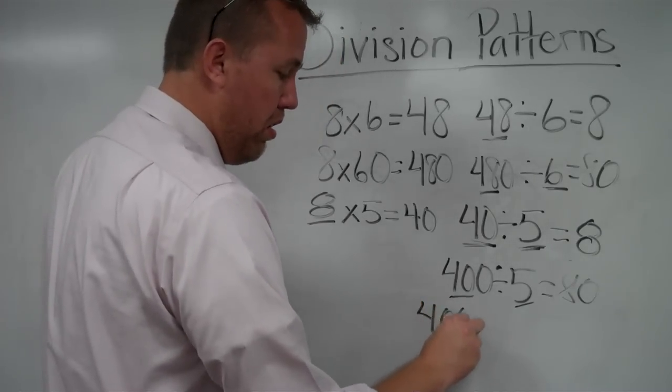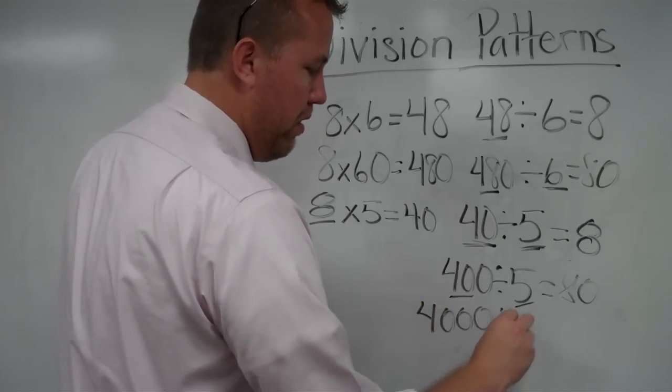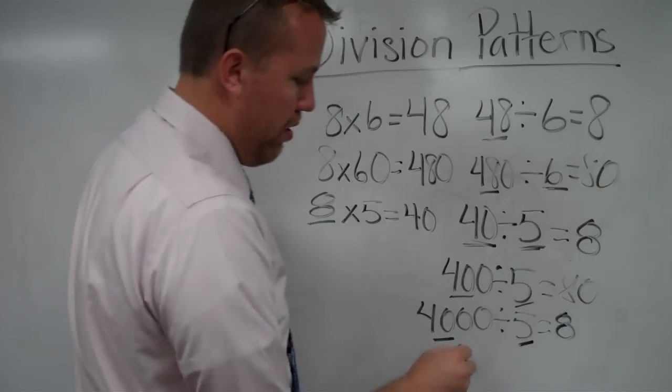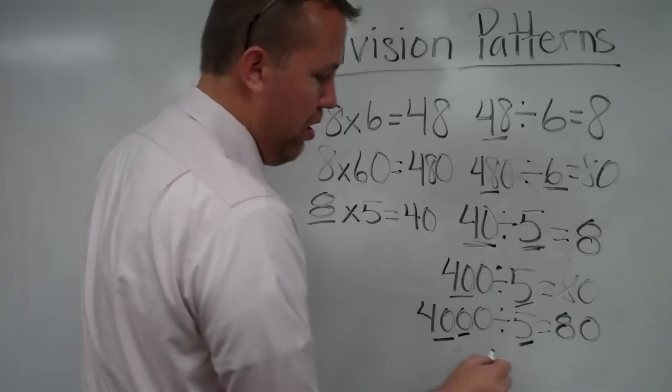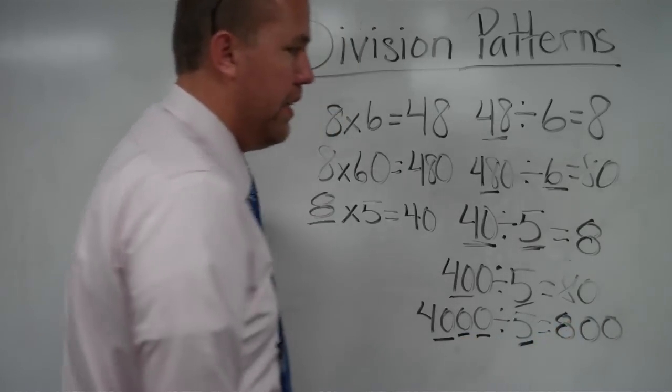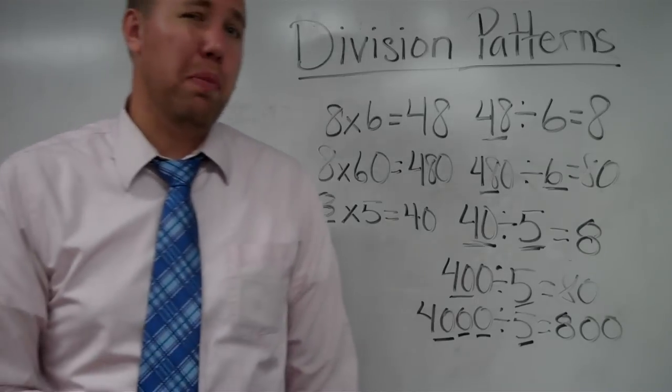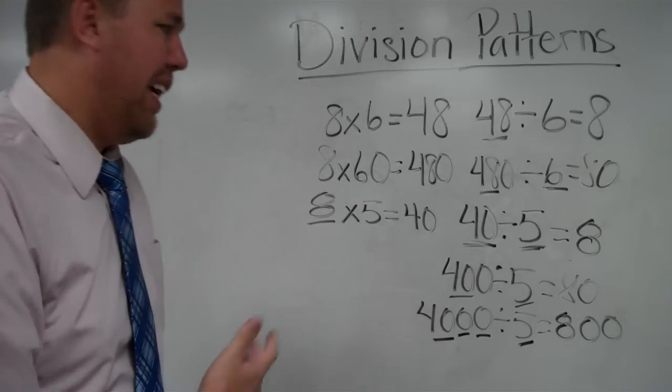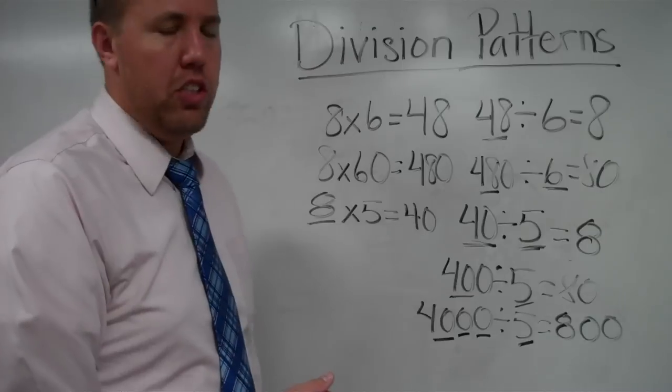4,000 divided by 5 equals 8 plus another 0, plus another 0, equals 800, and so on. Those are the division patterns that we will be looking at to help us be able to estimate and to understand division a little more.